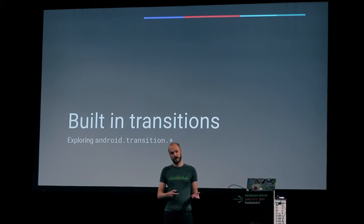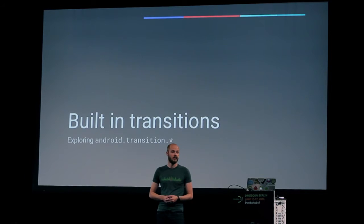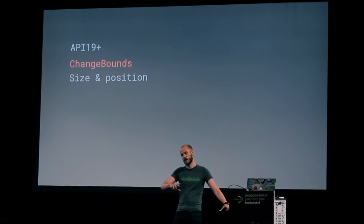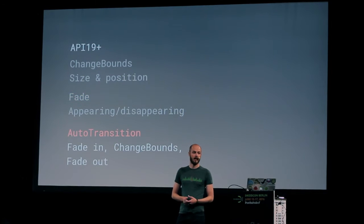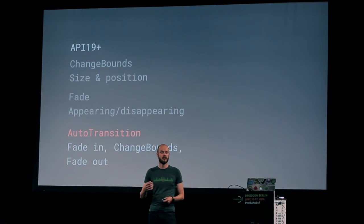Within the framework, we do have several transitions that are built in. From KitKat onwards, we had a couple of transitions already: change bounds, which allows you to change the size and position of a view — X and Y values as well as width and height. You can fade views — disappear and reappear. And there's another transition used within the framework as well. So if you work without your own custom transitions, views fade in, they change bounds, and then fade out.